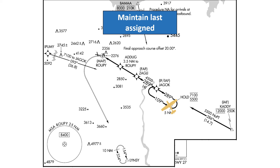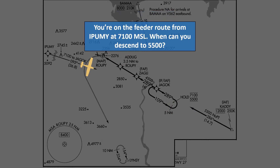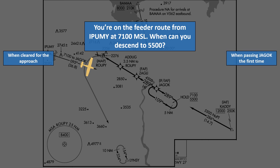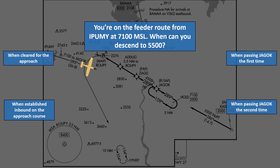For the next question, let's say we are on one of those published segments — the feeder route from IPUMI at 7100. When can you descend to 5500? When cleared for the approach? When passing JAGOK the first time? When established inbound on the approach course? Or when passing JAGOK the second time?